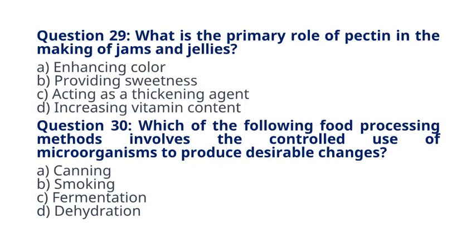Question 29. What is the primary role of pectin in the making of jams and jellies? A. Enhancing color. B. Providing sweetness. C. Acting as a thickening agent. D. Increasing vitamin content. The correct answer to question 29 is option C. Acting as a thickening agent. Explanation. Pectin is a natural carbohydrate that acts as a thickening agent in the making of jams and jellies, helping them set.